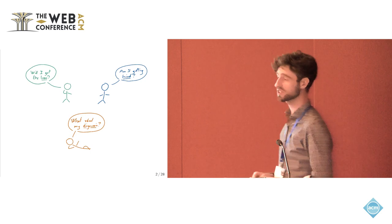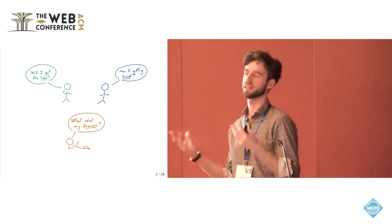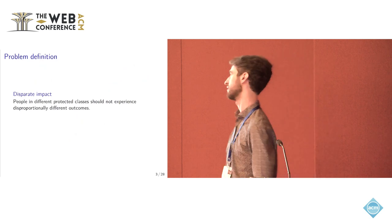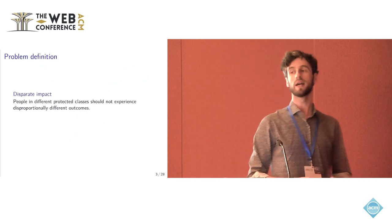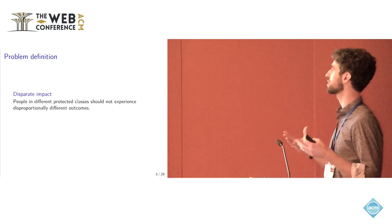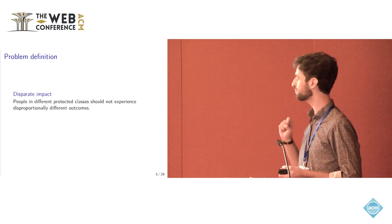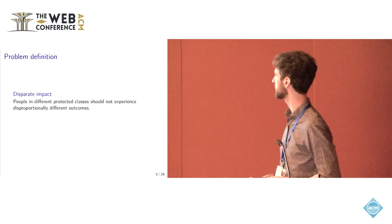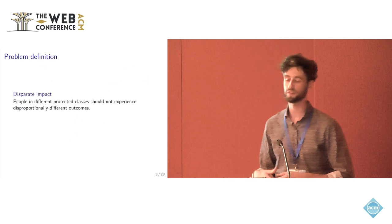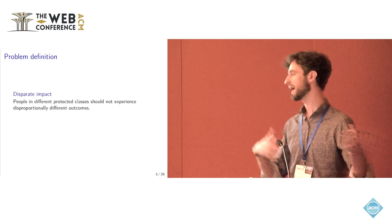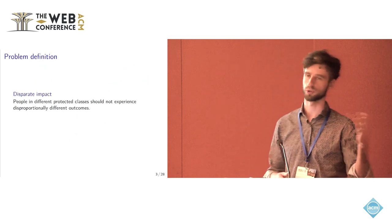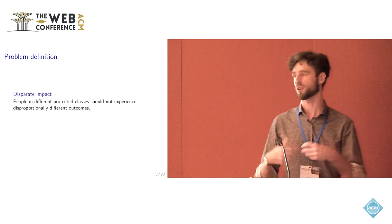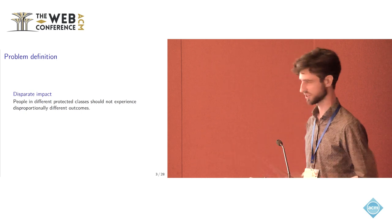The thing is that people are involved and each person is different. In this case, they're all different colors. Therefore, we want to be fair in some sense. There are many varied different definitions of fairness that are possible. In this work, we focus on the outcome of the process. There is this notion of disparate impact that basically states that people in different protected classes, think men and women or people with blue hair and red hair, should not experience very different outcomes from a machine learning process.